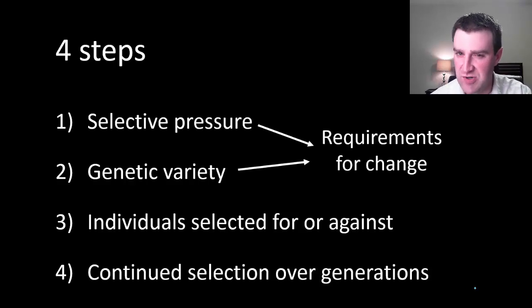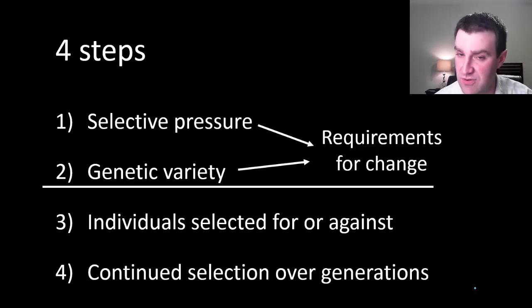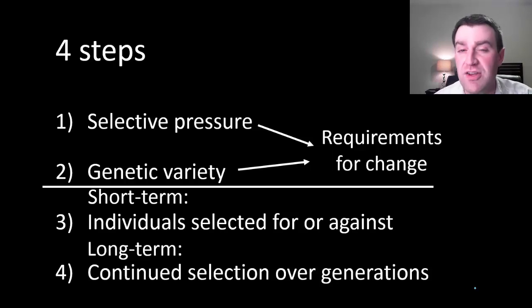Selective pressure and genetic variety are what I like to think of as the requirements for change. You need some kind of pressure making it hard to survive, and then you need differences among your individuals. If you have those two things, then in the short term, you're going to have individuals either selected for or against in one generation. If that continues to happen over many generations in the long term, then you'll eventually see the evolutionary change. That's a quick introduction to the four steps.